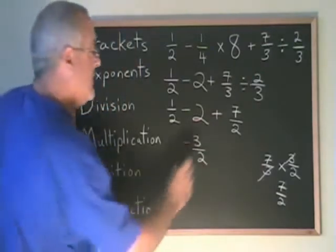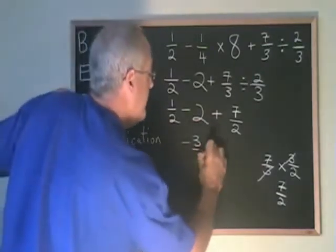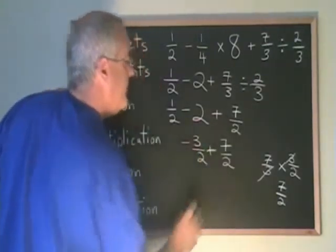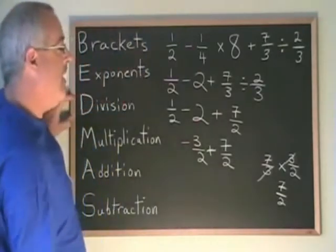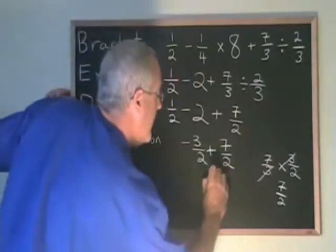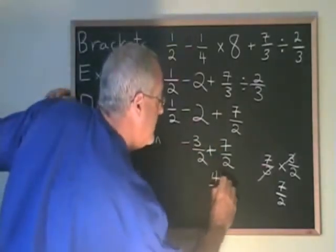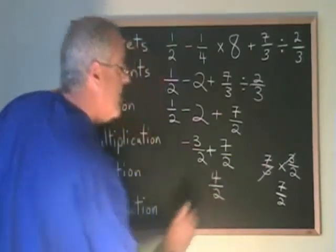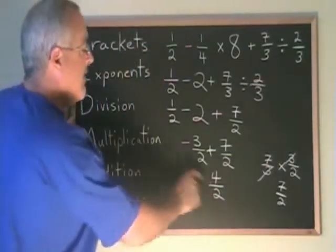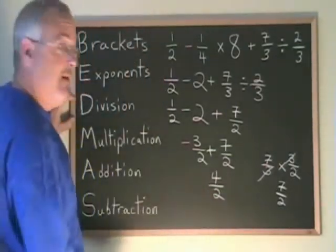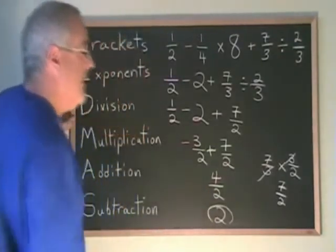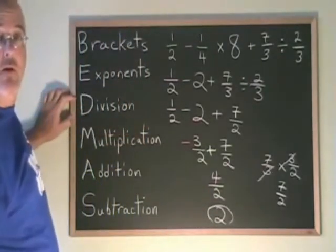And we copy down the rest of the problem. Negative 3 halves plus 7 halves is 4 halves. We are finished, except that we want to simplify our answer. 4 halves is equal to 2, so our answer is 2.